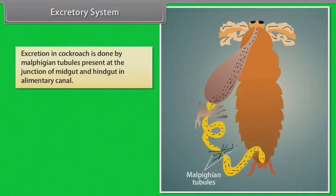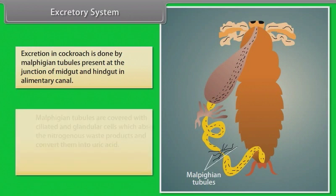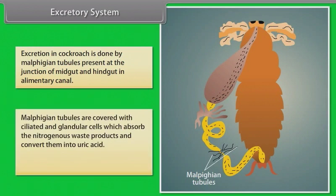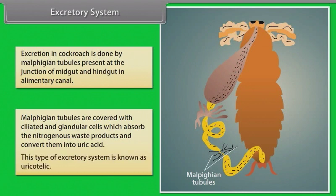Excretion in cockroach is done by Malpighian tubules, present at the junction of midgut and hindgut in the alimentary canal. Malpighian tubules are covered with ciliated and glandular cells which absorb nitrogenous waste products and convert them into uric acid. This type of excretory system is known as uricotelic.